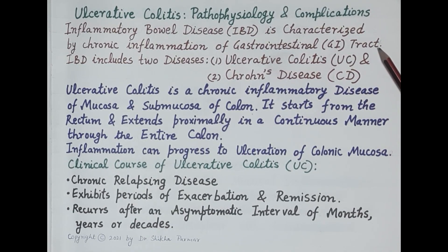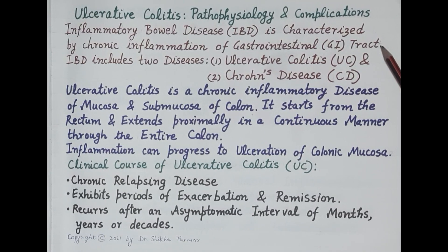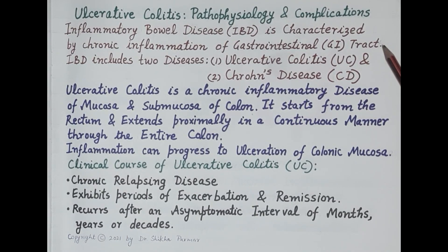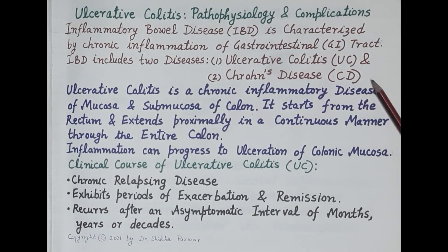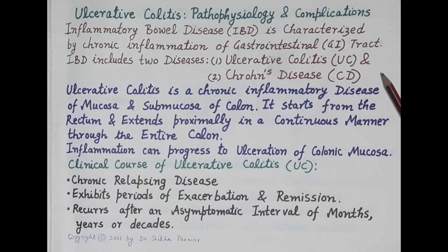There is inflammation of the wall of the gastrointestinal tract. The wall of the gastrointestinal tract is made up of four main layers: the innermost is the mucosa, below that is the submucosa, then the muscle layer, and the outermost is the serosa. Inflammatory bowel disease includes two diseases: ulcerative colitis and Crohn's disease.